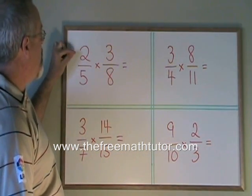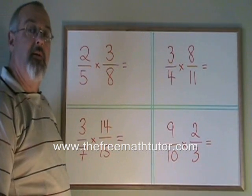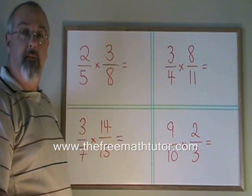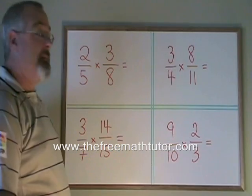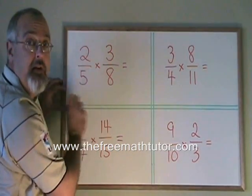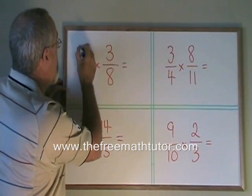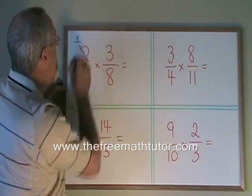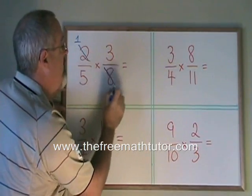And they have a common factor of 2. So when I'm canceling, I can divide a 2 from each of those. 2 divided by 2 is 1, and 8 divided by 2 is 4.